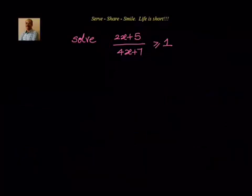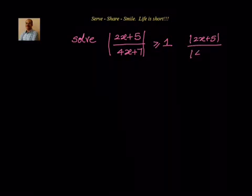Hello friends, welcome back. As part of problems related to modulus of a variable, let us look at this example. We have been given (2x + 5) / (4x + 7) with modulus, and its value is greater than or equal to 1. We have to solve for x. First, we will take the numerator and denominator separately: modulus of (2x + 5) divided by modulus of (4x + 7) greater than or equal to 1.